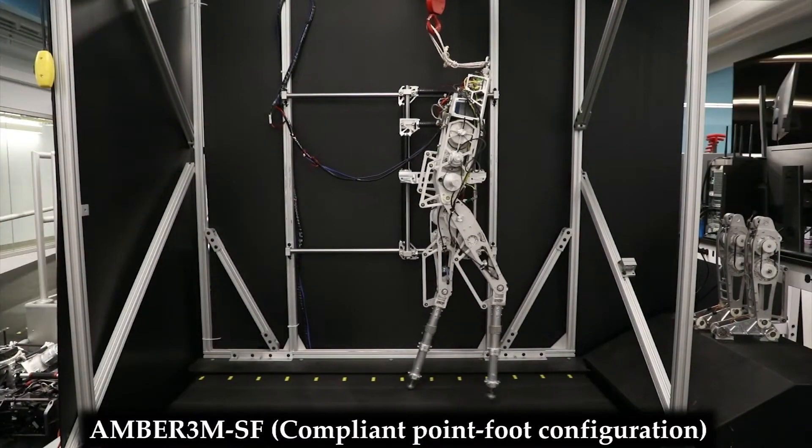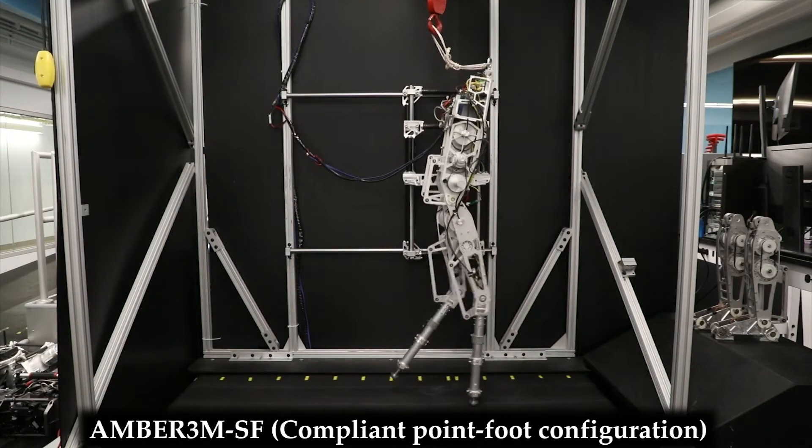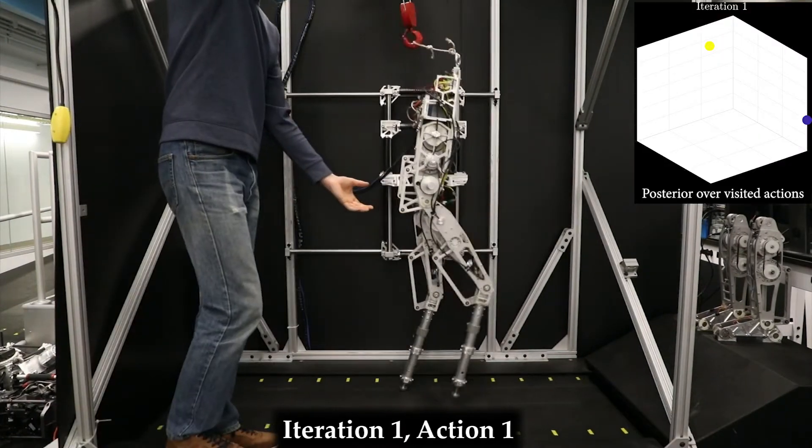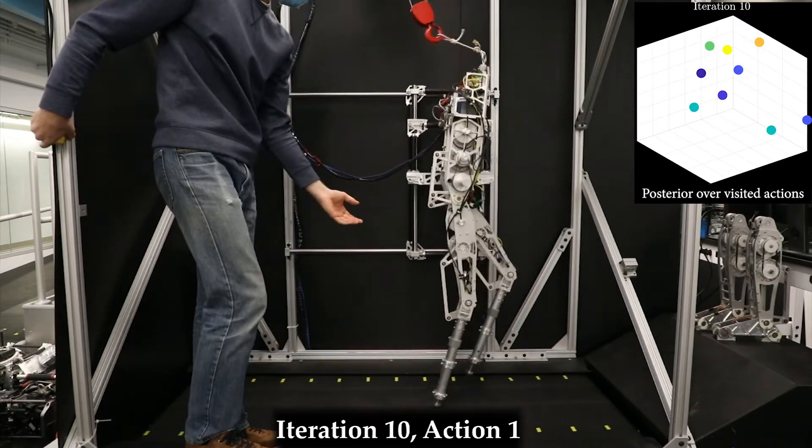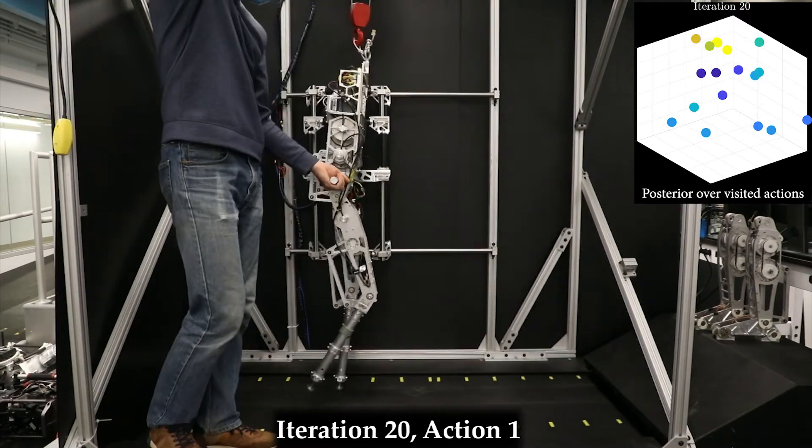To highlight the power of the learning method, the procedure was repeated on AMBER 3M with unmodeled compliance at the feet, which is challenging since historically achieving compliant walking has required complex models.